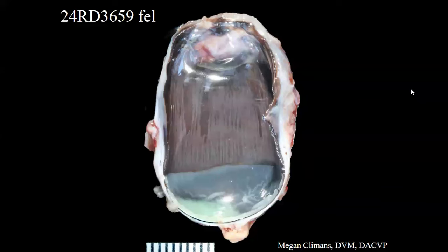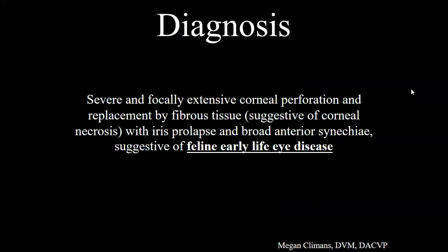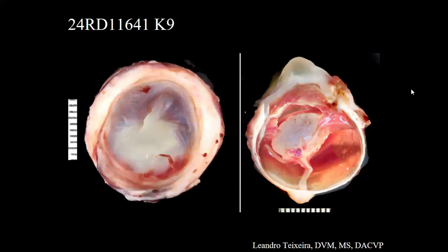With a sealed corneal perforation, all the aqueous being produced just accumulates in the posterior chamber, stretching and expanding to accommodate the pressure without putting too much stress in the back. You fix it with enucleation. The main diagnosis: feline early life eye disease.